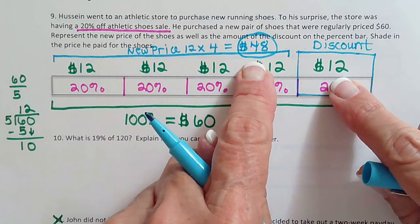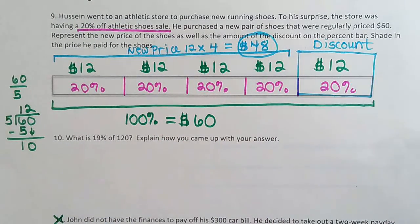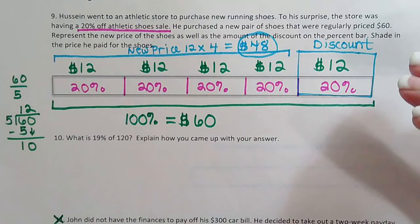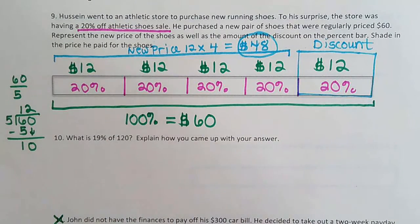That's how much he saved. Together, those two add to 60 which is what they cost. Super awesome, huh? You can read so much information from these. The regular price, the discount, the new price. So it's all there.